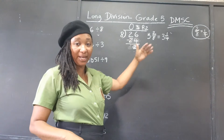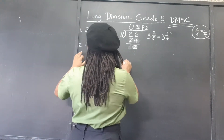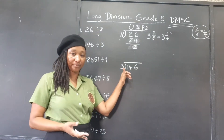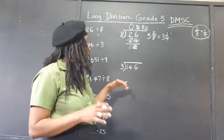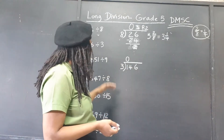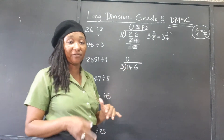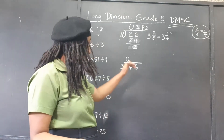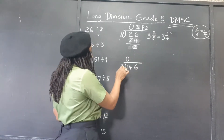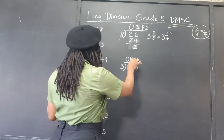Now let's do 146 divided by 3. Three cannot go into 1 exactly, so we skip it. 3 into 14 goes 4 times — that's the division step. Now we multiply: 4 times 3 is 12.